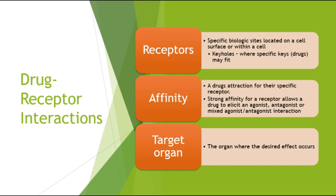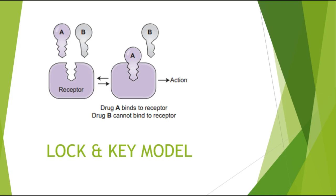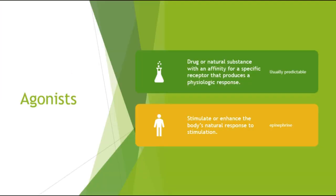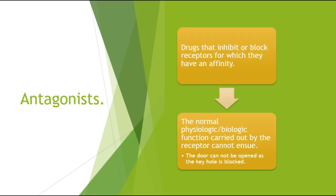Here is the lock and key model — only one key will fit, so drug A binds to the receptor where drug B cannot. An agonist is a drug or natural substance with an affinity for a specific receptor that produces a physiologic response, stimulating or enhancing the body's natural response. An example is epinephrine. An antagonist is a drug that inhibits or blocks receptors for which it has affinity, so the normal physiological function carried out by the receptor cannot occur — the door cannot be opened as the key is blocked.